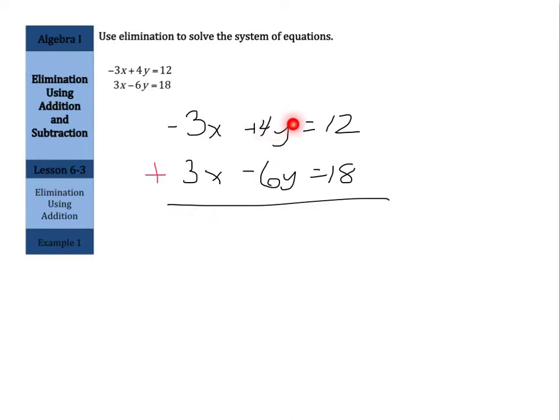So then if I add 4y to a negative 6y, I would have negative 2y. That would equal whatever 12 plus 18 is. Well, 12 plus 18 is 30. And if I divide by negative 2 on both sides here in order to solve for y, y is going to equal negative 15.